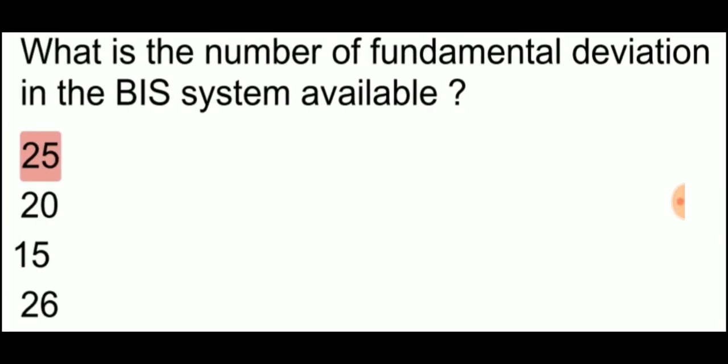What is the number of fundamental deviation in the BIS system available? Fundamental deviation in BIS system is 25.